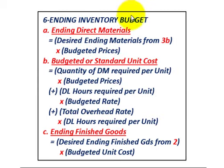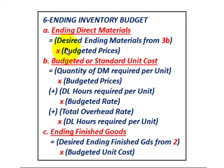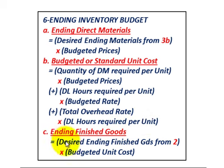For the ending inventory budget, number six: item A, ending direct materials equals the desired ending materials from 3B times budgeted prices. Item B, budgeted or standard unit cost equals the quantity of direct material required per unit times budgeted prices for each, plus direct labor hours required per unit times the budgeted rate, plus total overhead rate times direct labor hours required per unit. Item C, ending finished goods equals desired ending finished goods from the production budget times budgeted unit costs.